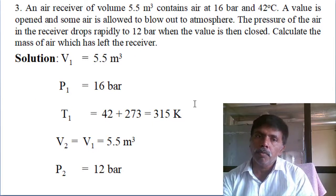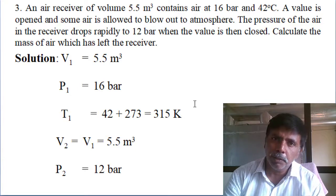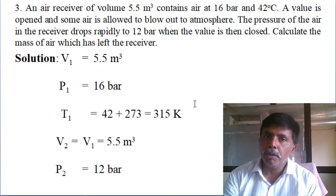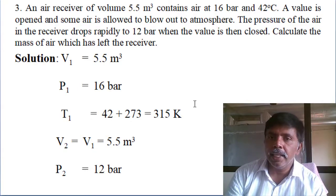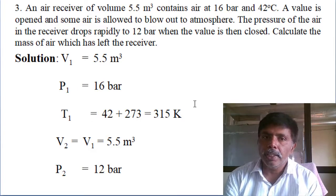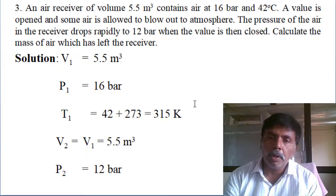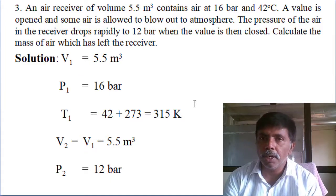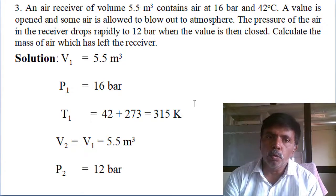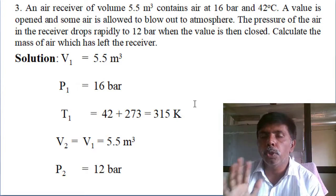Moving to the third question — this is a common real-life scenario. An air receiver of volume 5.5 m³ contains air at 16 bar and 42 degrees centigrade. A valve is opened and some air is allowed to blow out to the atmosphere.